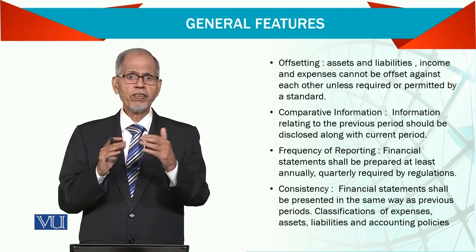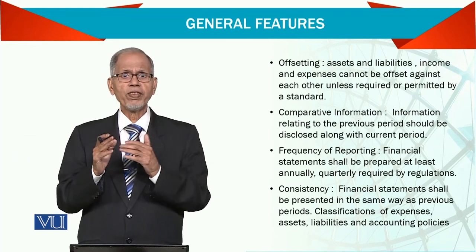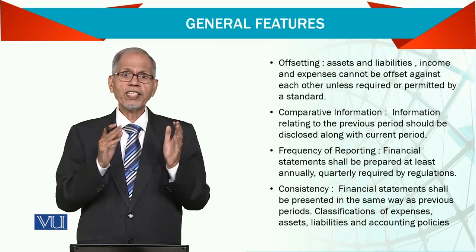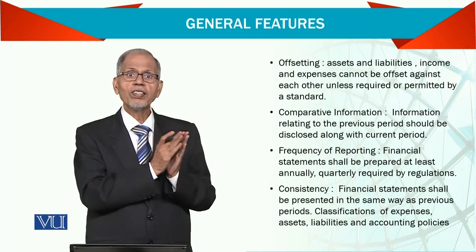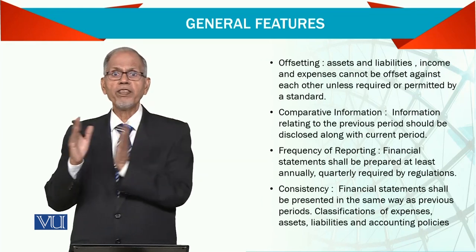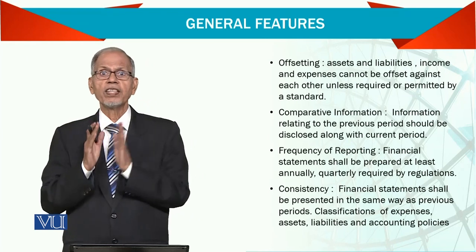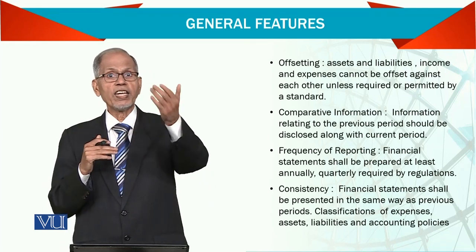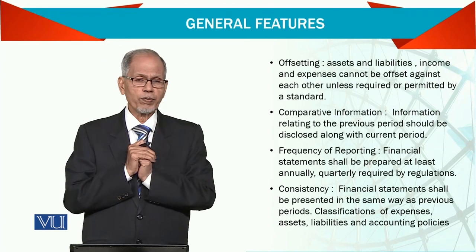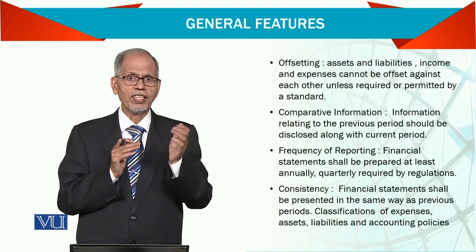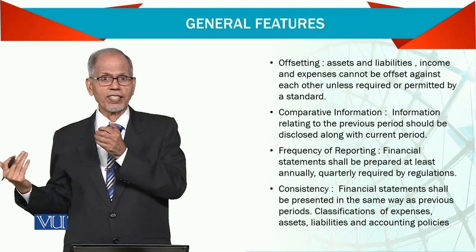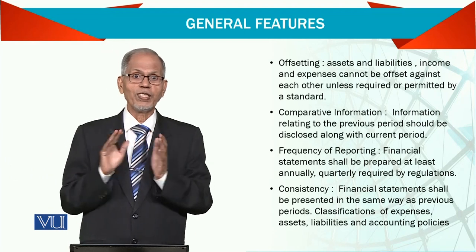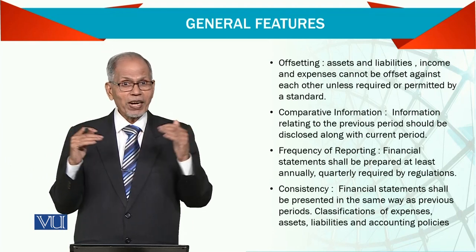For example, in the textile sector, if we look at two weaving companies — Company A and Company B — and one is showing a 50% gross profit margin while the other is showing 30%, it means something is wrong and we need a comparison to understand why.